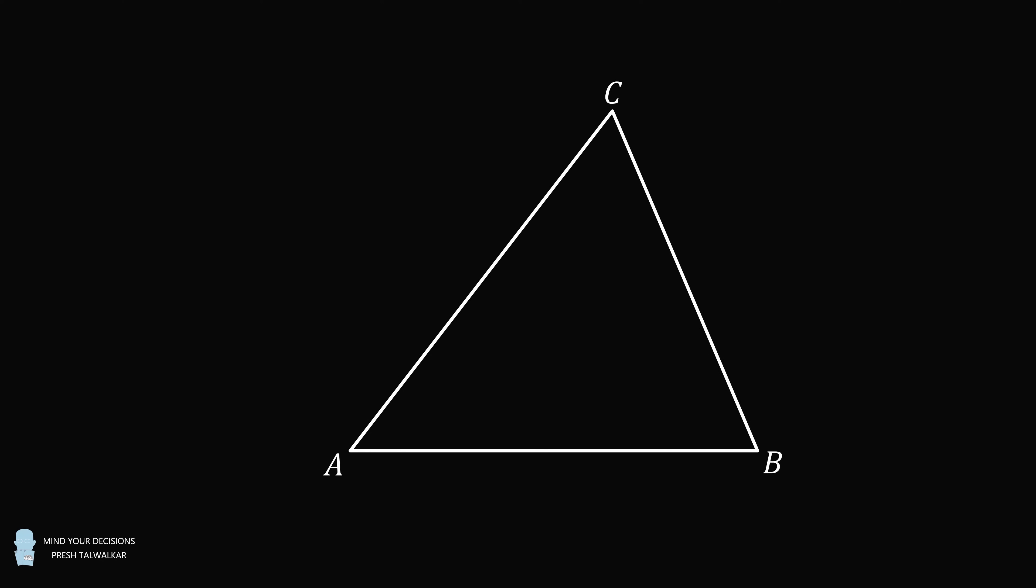Start with triangle ABC. Construct AD, where D is on the side BC. Then construct BE, where E is on the side AC. Finally, construct CF, where F is on the side AB and all three segments AD, BE, and CF intersect at a mutual point G.